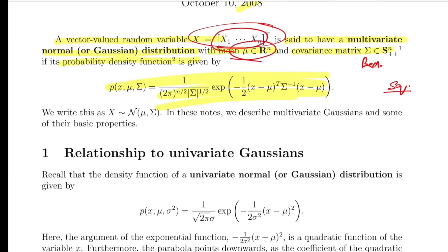Mu, which is the mean, is also of n dimensions. So each Gaussian distribution — x1 through xn — will have its respective mu_i and sigma_i. For example, x1 has mu1 and sigma1, and xn has mu_n and sigma_n — that is their mean and standard deviation. We'll see what the covariance matrix is as we move further.